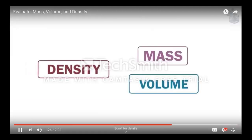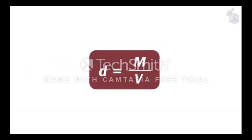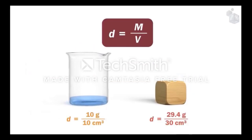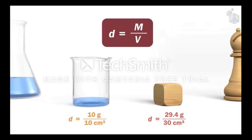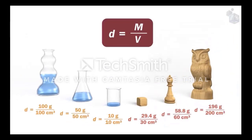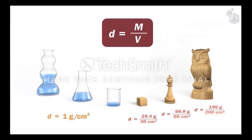On the other hand, density is the ratio between mass and volume. It is a property of materials, since each material has its own specific density. Therefore, different objects made of the same material always have the same density, regardless of their mass and volume.